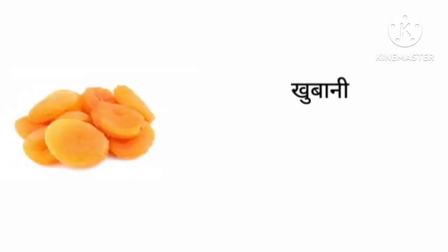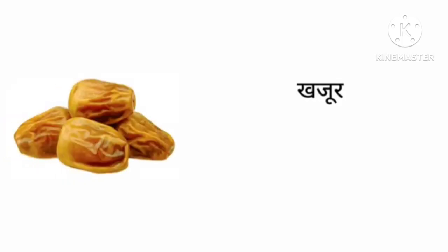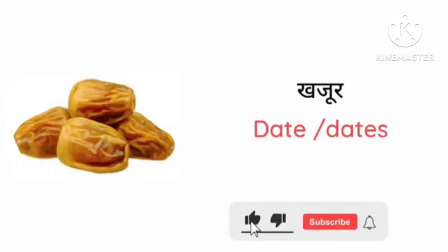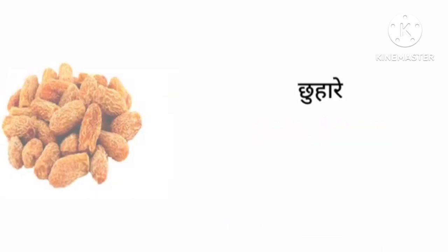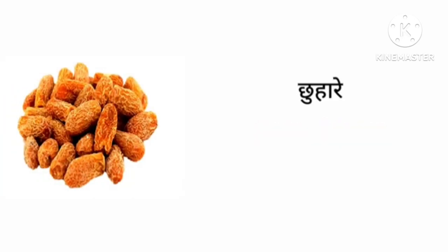Khubani. Khubani in English is dry apricot. Kajur. Kajur in English is date or dates. Chuhare. Chuhare in English is dry dates.